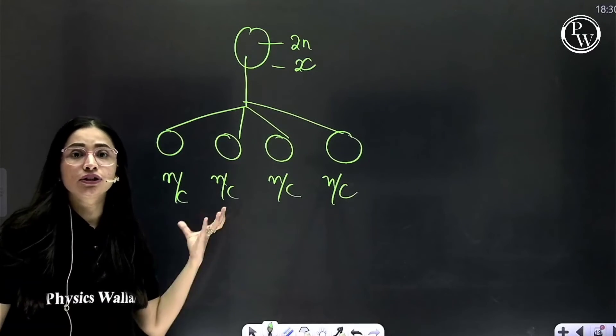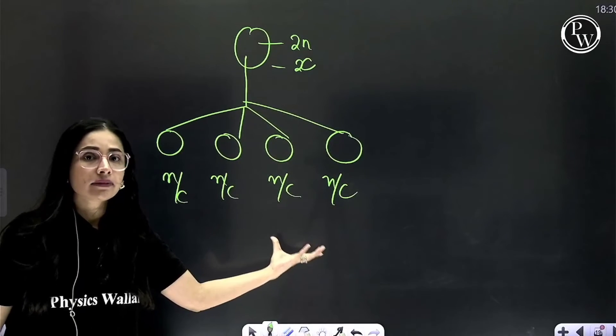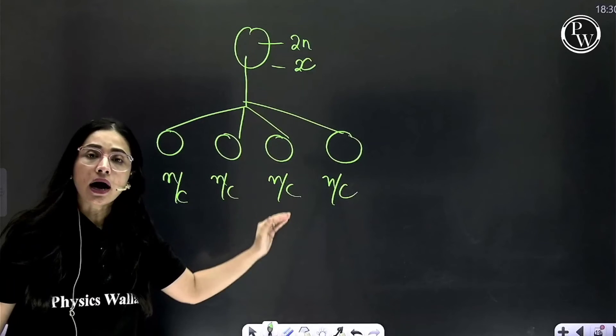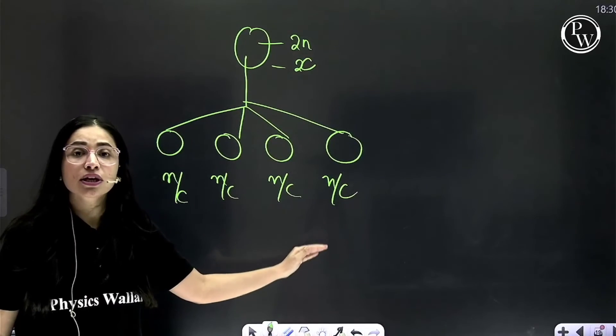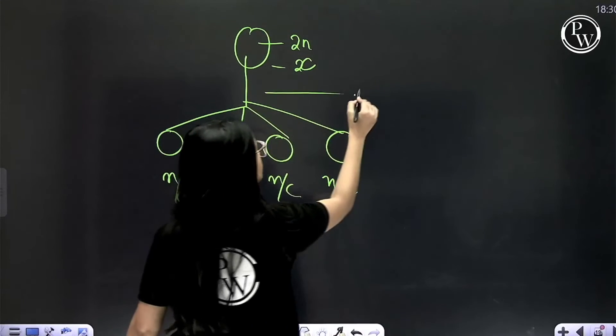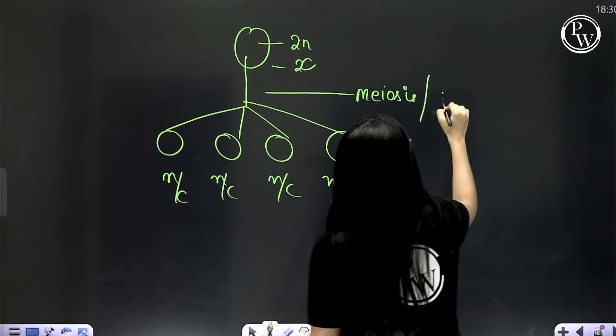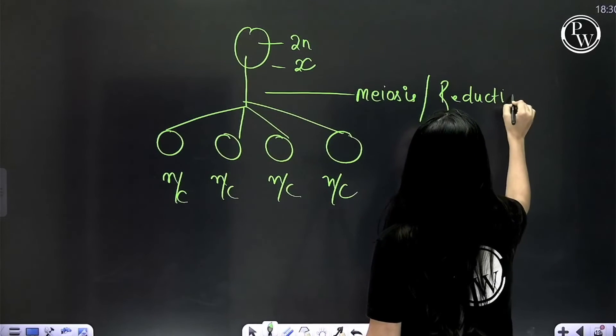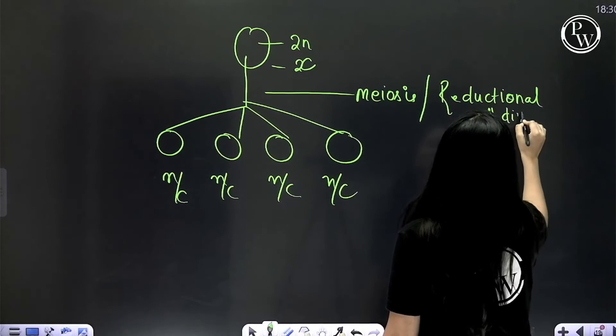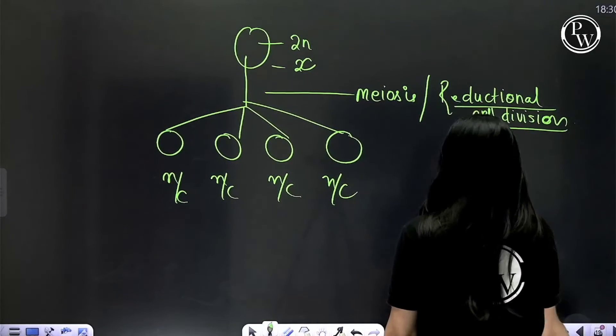So here the daughter cells produced are neither identical—they are similar but not identical. And the amount which they receive is just half. The amount gets reduced. That is why meiosis is also known as reductional cell division.